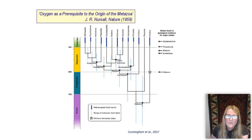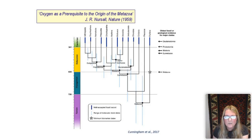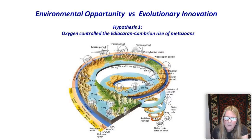It has been suggested for well over half a century that changing oxygen levels have some dynamic role to play in the history of the metazoa — not so much in the origin of the metazoa, but certainly in its later manifestation in the fossil record. This is what I particularly want to hone in on. So I'm going to set up a series of hypotheses. The first: that oxygen did control the Ediacaran-Cambrian rise of metazoans.